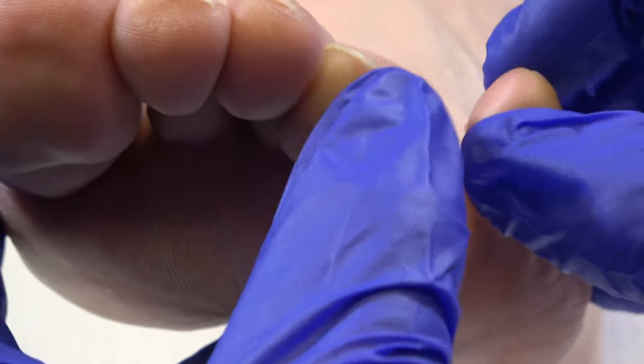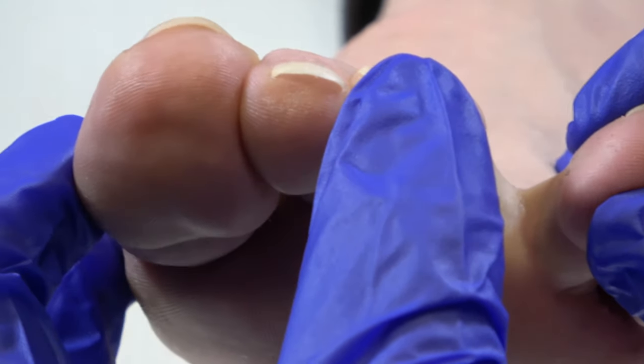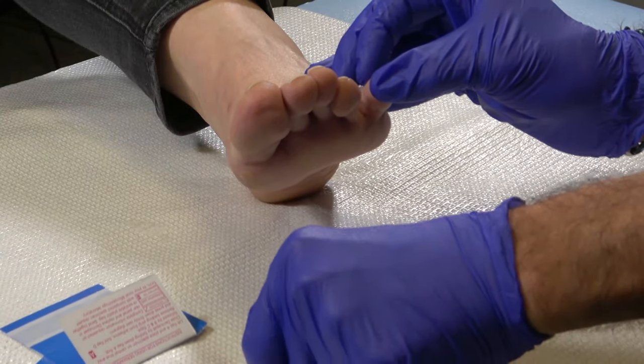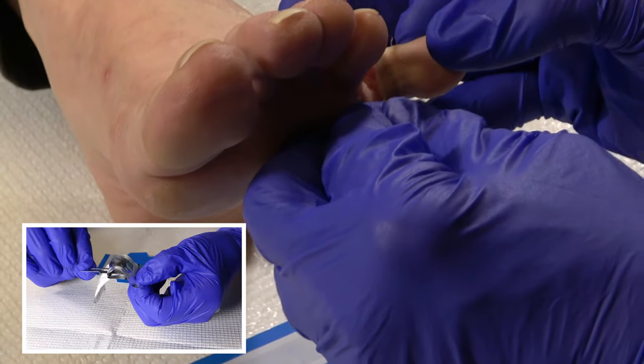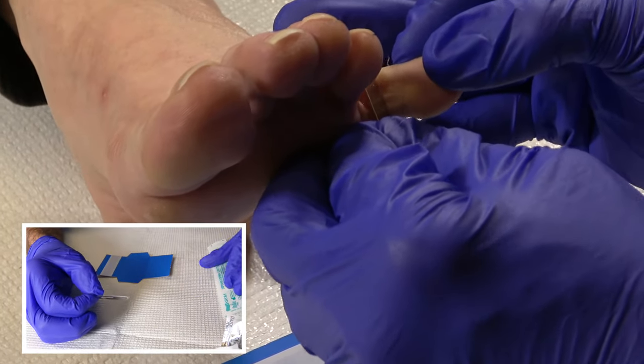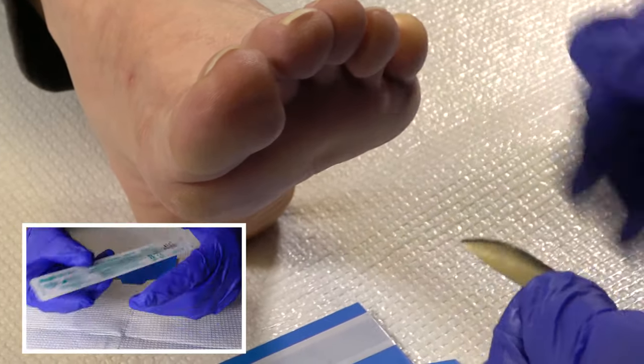The collection method for a web space is a simple superficial skin scraping performed in office. The scraping can be performed utilizing a 10 or 15 blade, however any size blade may be used for specimen collection.